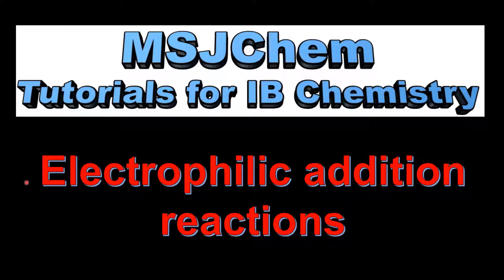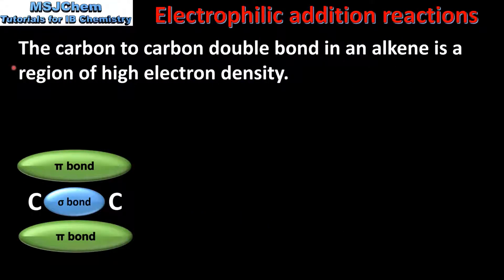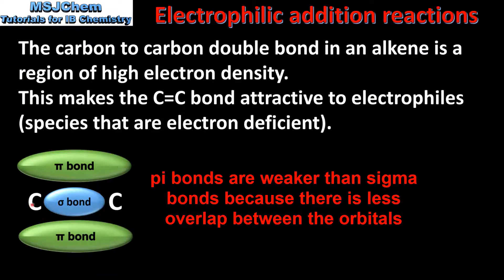This is MSJChem. In this video I'll be looking at electrophilic addition reactions. The carbon-to-carbon double bond in an alkene is a region of high electron density. This high electron density makes the carbon-to-carbon double bond attractive to electrophiles. The double bond is composed of one sigma bond and one pi bond. In an addition reaction, the pi bond breaks and the electrons from the pi bond are used to bond other atoms to the molecule.